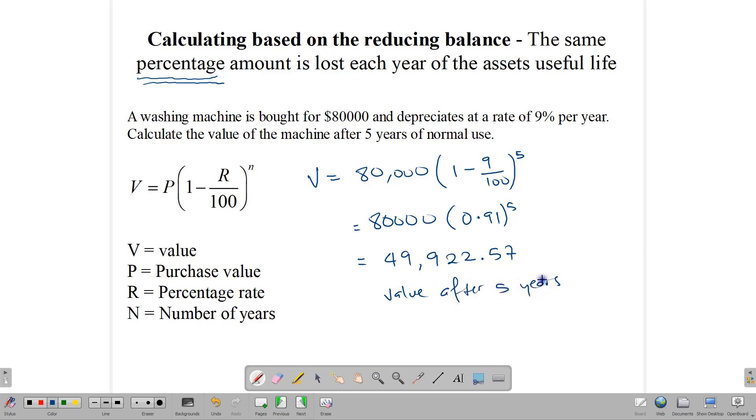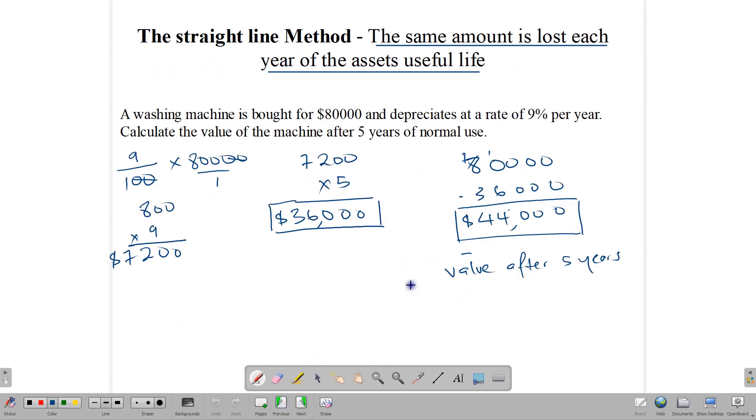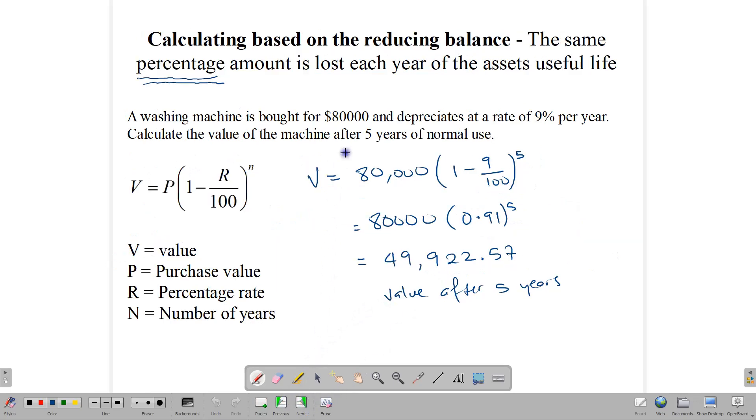Notice that you get two different answers. When you use the straight line method, you end up with $44,000. And when you use the reducing balance method, you end up with $49,922.57. There are two different methods for calculating the same thing. CXE uses both of these methods. I am pretty sure that in accounts, they use the linear method. In the mathematics side, we tend to use this formula to work out the depreciation value. And on City and Guilds papers, they use the linear method as well.